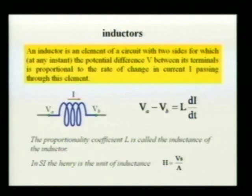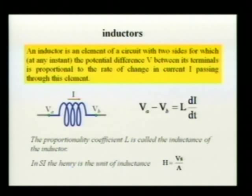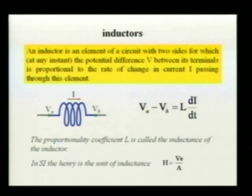Let's consider a puzzle. Take a one Henry inductor and maintain a potential difference of one volt across it. What can you say about the current? For example, for a one Henry inductor with one volt applied for one second — what will happen to the current? Consult with each other.